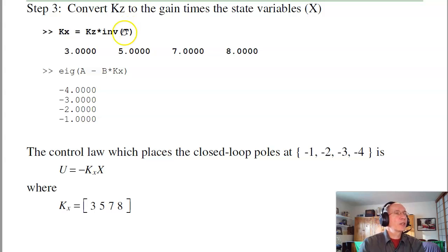Now convert back to X. With a similarity transform of T, KX is just KZ times T inverse. So there's my feedback gains: 3, 5, 7, and 8. And as a check, the eigenvalues of A minus BKX should be where I put them. And sure enough, they are at minus 1, 2, 3, and 4. So these feedback gains place the poles where I want them.